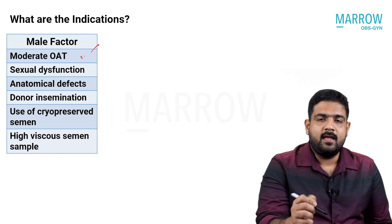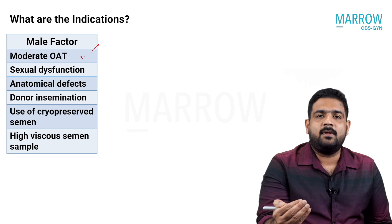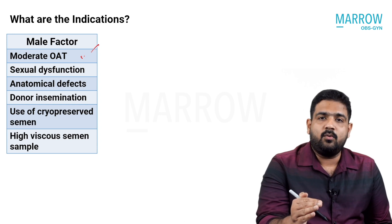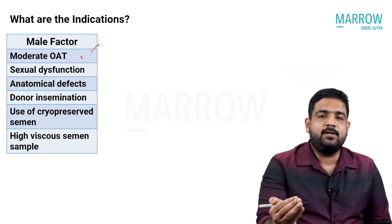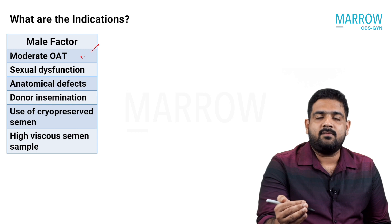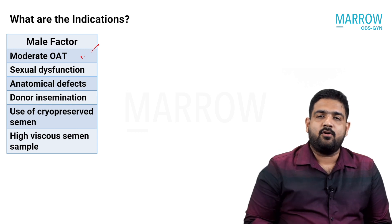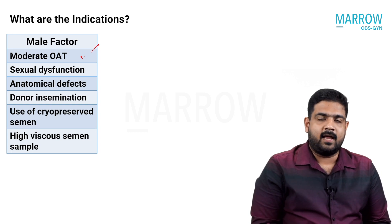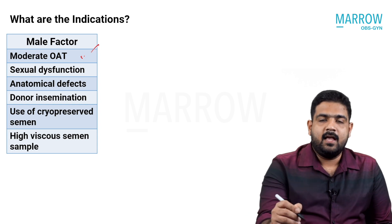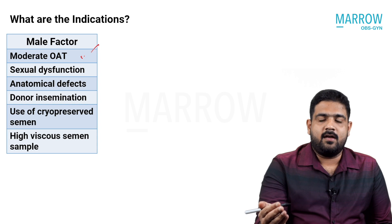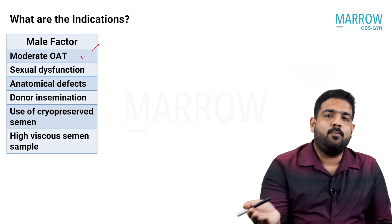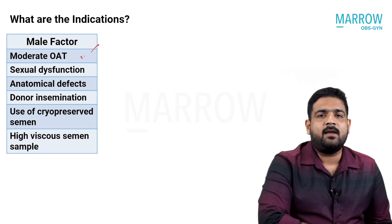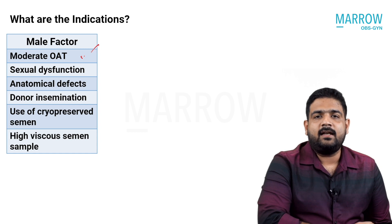Next comes sexual problems, which are very common today. Many couples suffer from sexual problems such as erectile dysfunction, mostly due to performance anxiety, which reduces sexual frequency and prevents regular intercourse — that is one indication for IUI. Ejaculatory disturbances such as retrograde ejaculation, where semen flows back into the bladder instead of through the urethra, is also an indication. Anejaculation — where the man is unable to achieve orgasm and eject spermatozoa — is another indication.